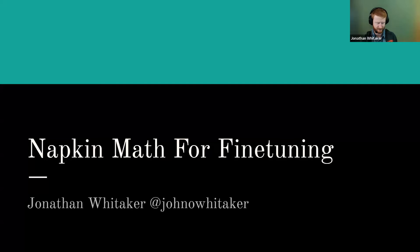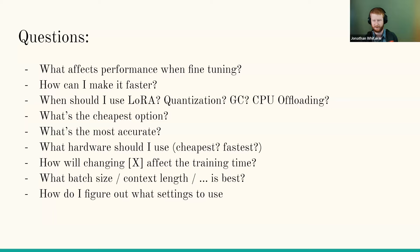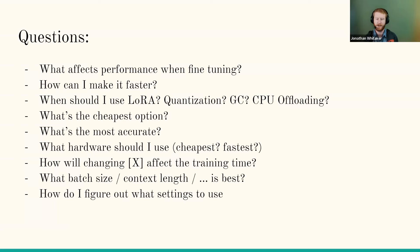Welcome everybody. The talk is titled 'Napkin Math for Fine-Tuning.' The goal is to answer a number of related questions that often come up when talking about training, especially with many people getting into training models for the first time via fine-tuning big existing models. What affects performance? How do I make this better or worse? Why is it running out of memory or taking so long?